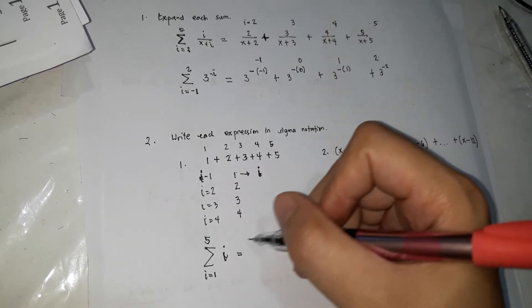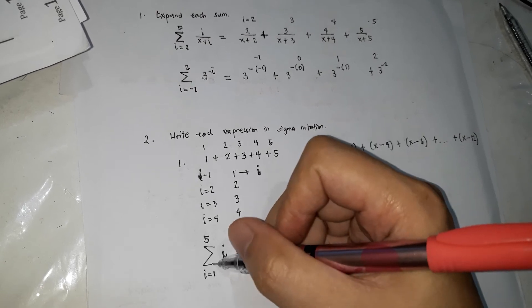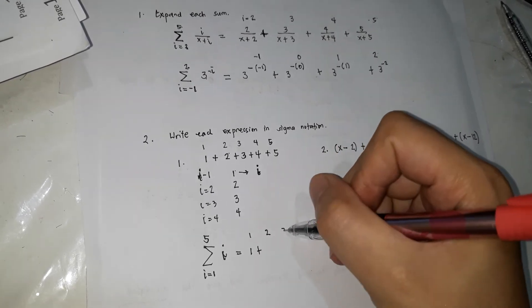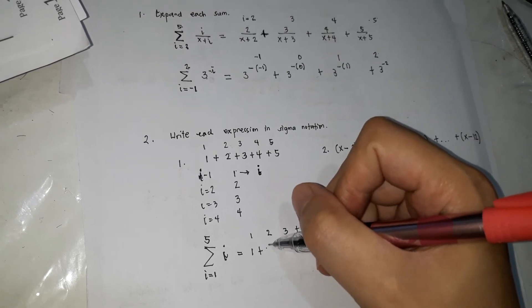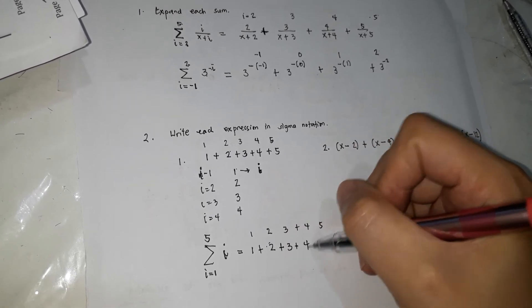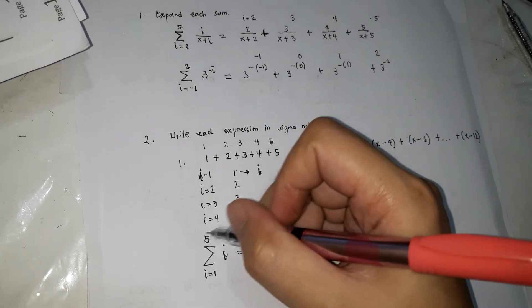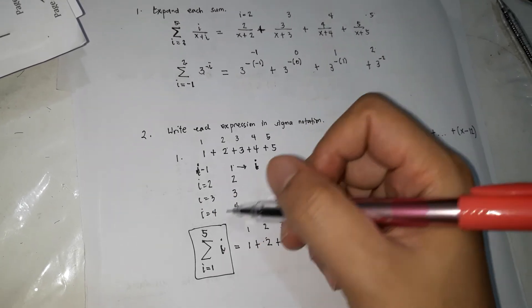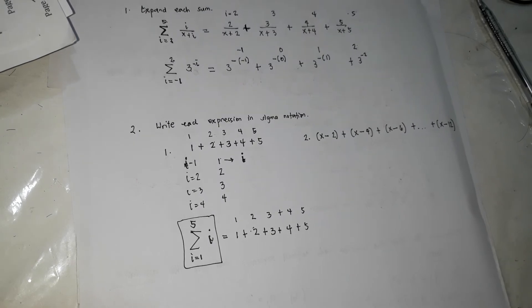Kung halap akong 1, 1. Kung 2 na, 2 lang. Kung 3, 3. Kung 4, 4. Kung 5, 5. So this is the summation notation or the sigma notation.